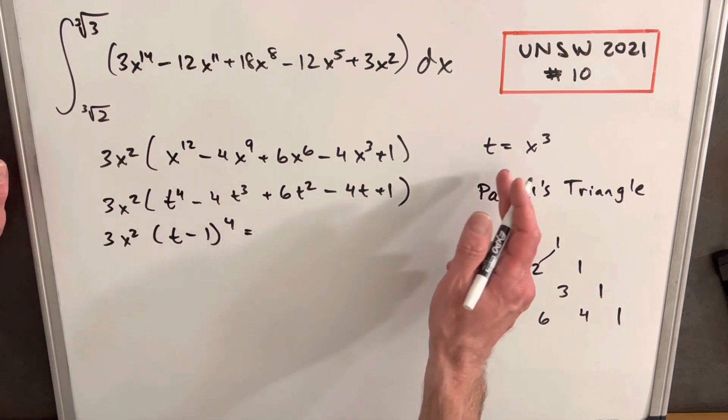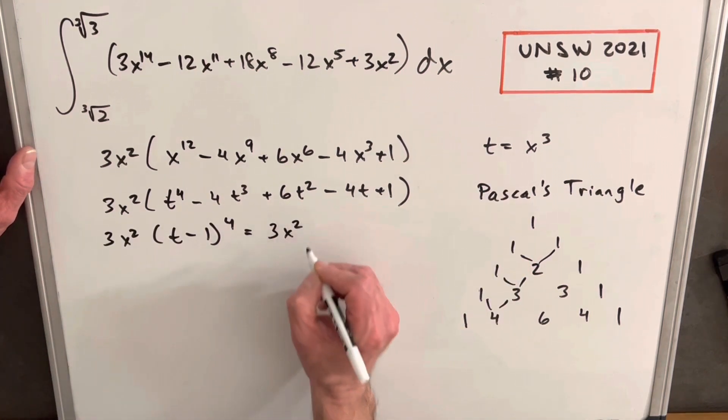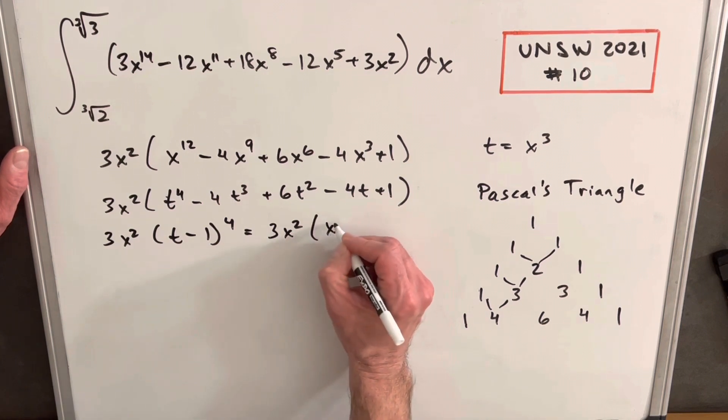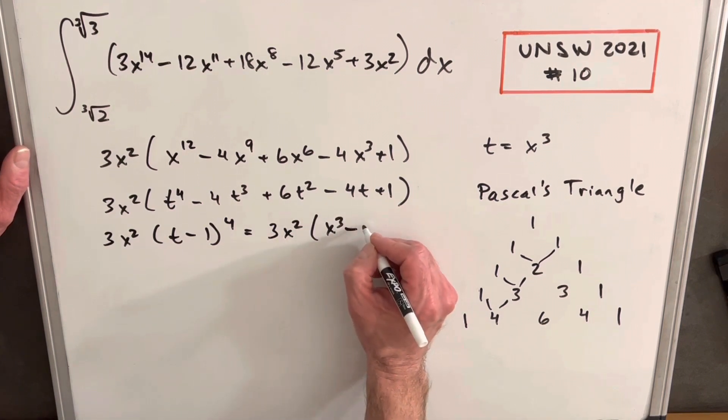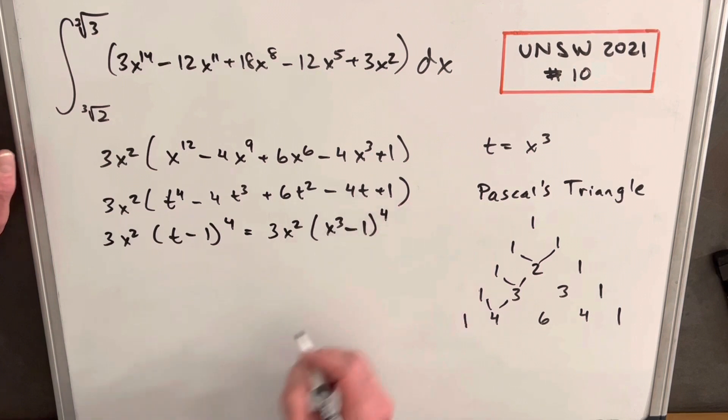And from there, all I'm going to do is plug back in for our t value, so we have this all back in terms of x before we get back to our integral. So we're going to have 3x squared times (x cubed minus 1) to the 4th.